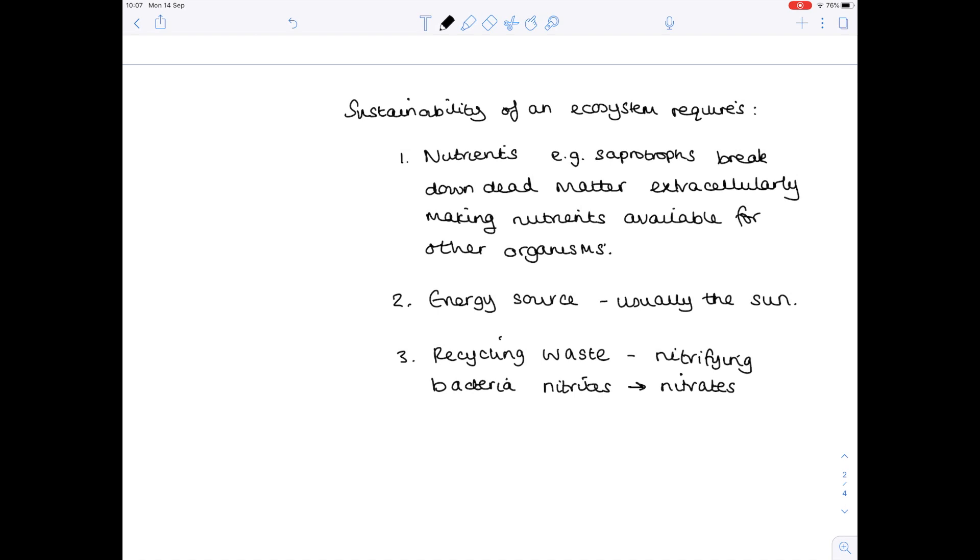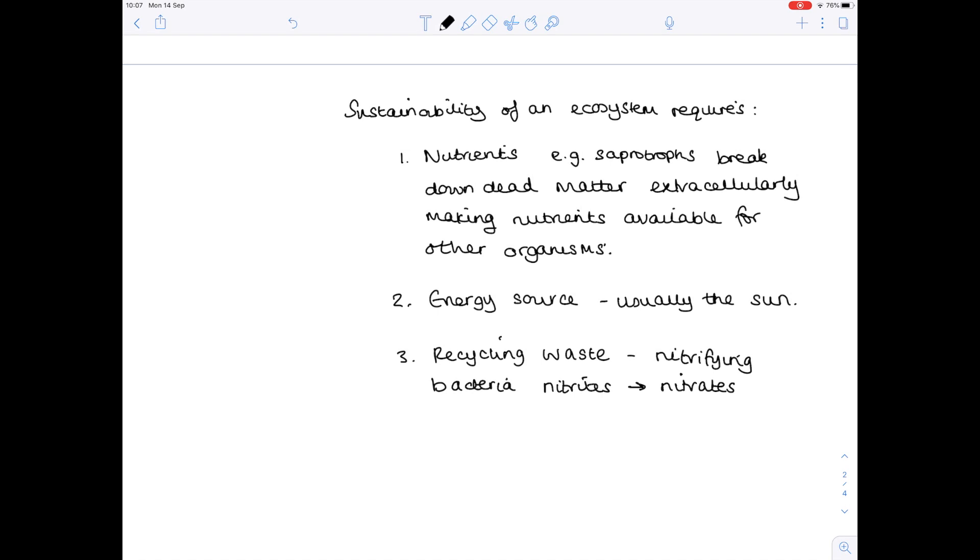So now it's time to tell you what a mesocosm is. Well it's a small experimental area set up as an ecological research programme. So effectively you have a mini ecosystem within a controlled environment such as this flask that you see here.